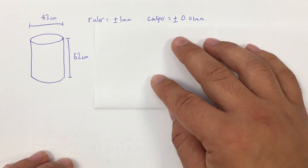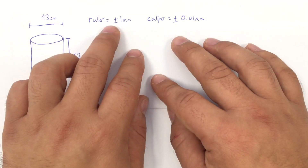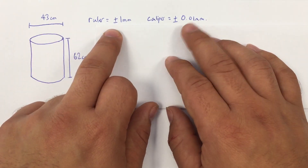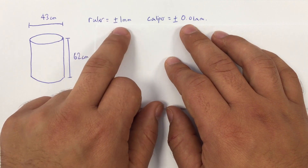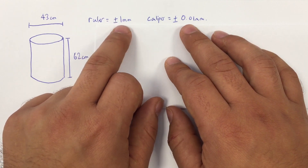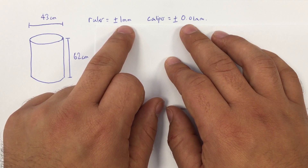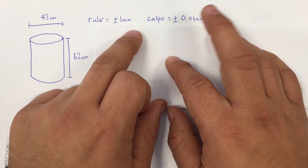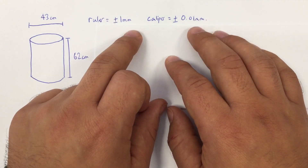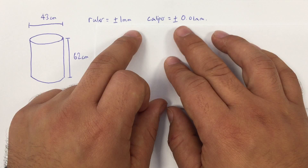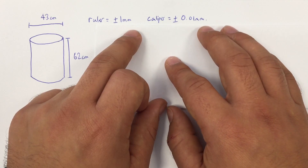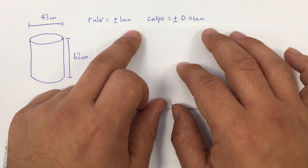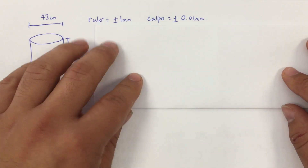We're going to do this when we've measured these two values with two different pieces of equipment. We have a ruler, which has an absolute uncertainty of plus or minus 1 millimetre — that's also its resolution — or a caliper, which has a higher resolution of plus or minus 0.001 millimetres. We're going to look at how that affects the absolute uncertainty.